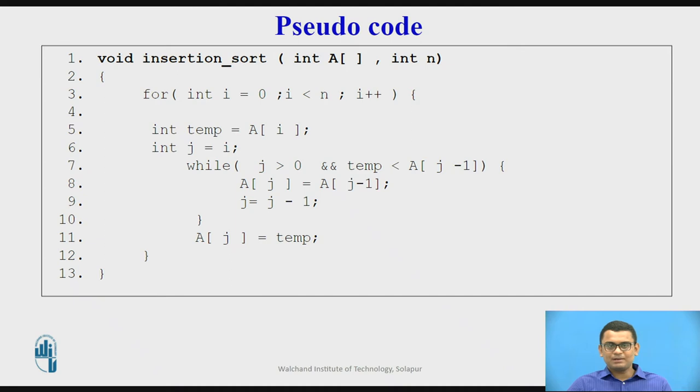Say we have an array A of size n and we are scanning the elements from 0 till n-1. I set the ith element value to temp and then I am scanning again for j greater than 0 till the value stored in temp is less than A[j-1].